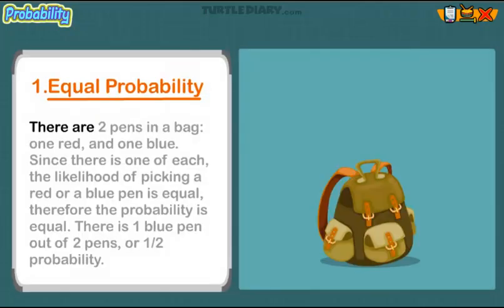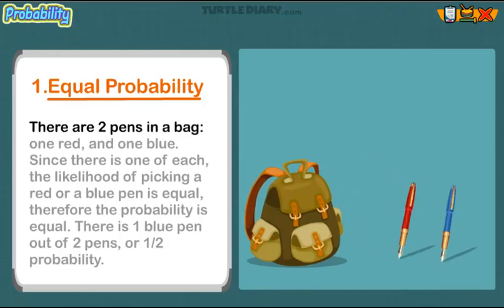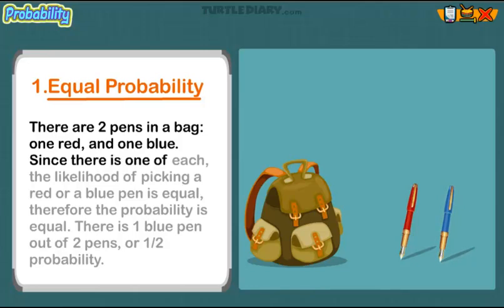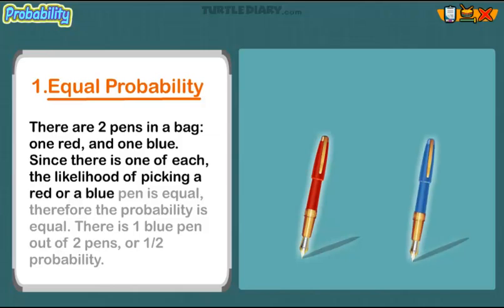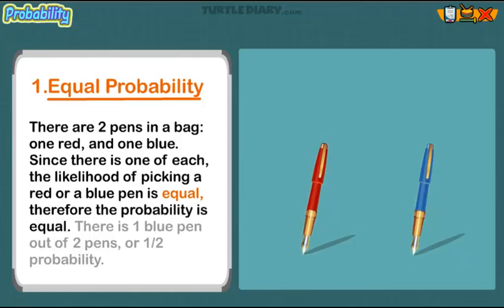There are two pens in a bag, one red and one blue. Since there is one of each, the likelihood of picking a red or a blue pen is equal. Therefore, the probability is equal. There is one blue pen out of two pens, or half probability.